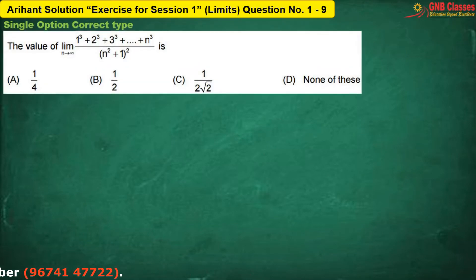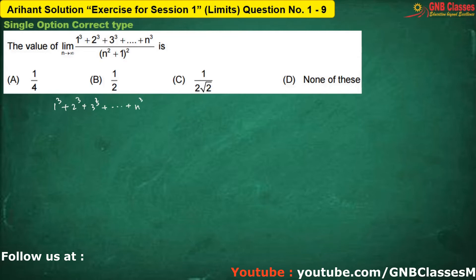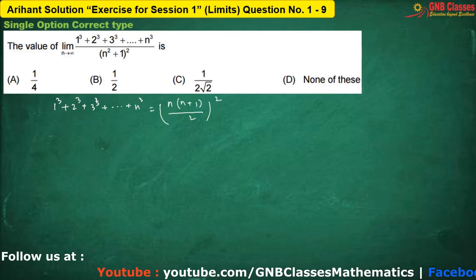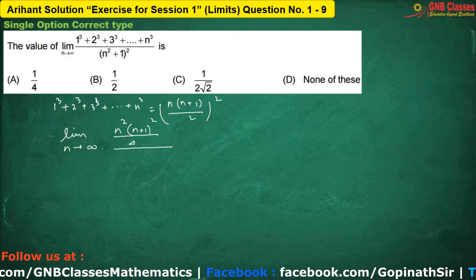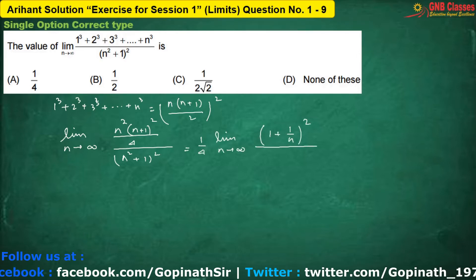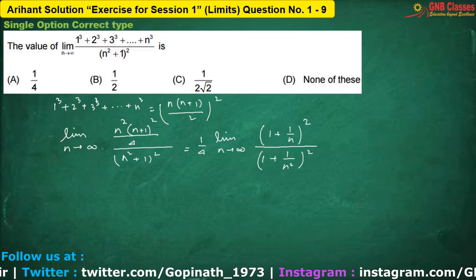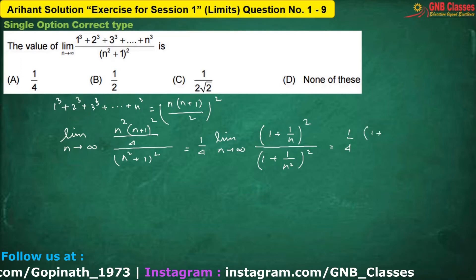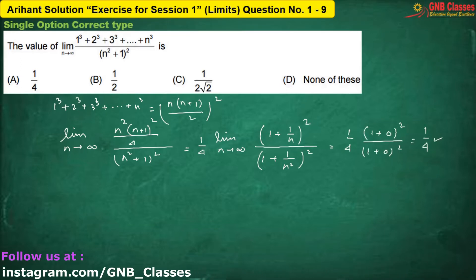In this problem, we will apply the formula for the sum of the cube of the first n natural numbers. Therefore, the given limit is simplified. As n approaches towards infinity, the answer is 1 by 4. Hence, option A is correct.